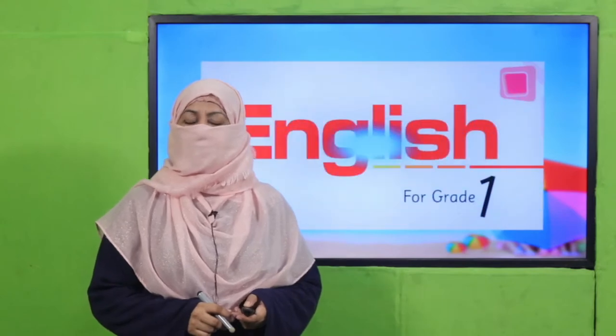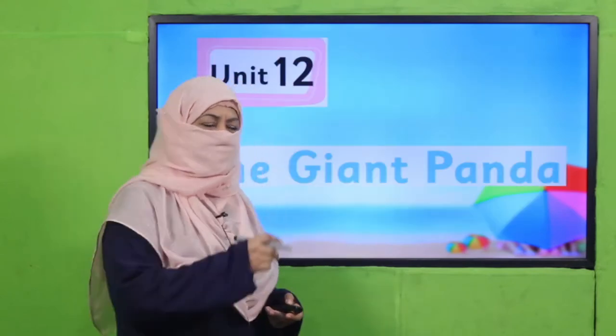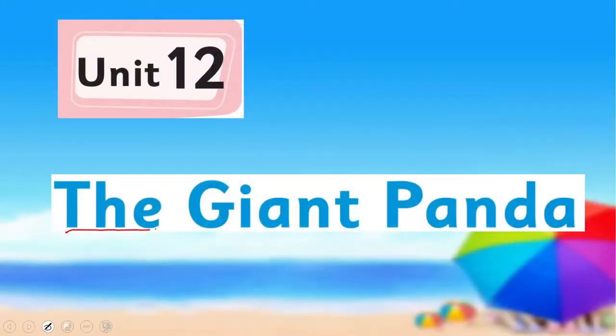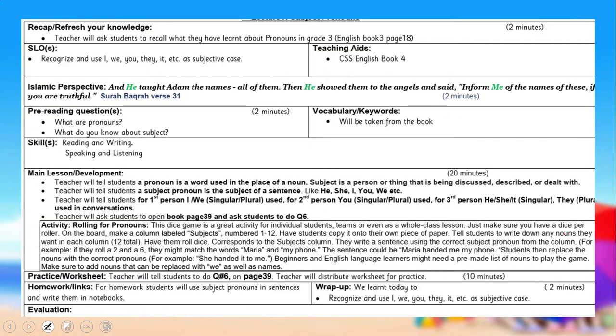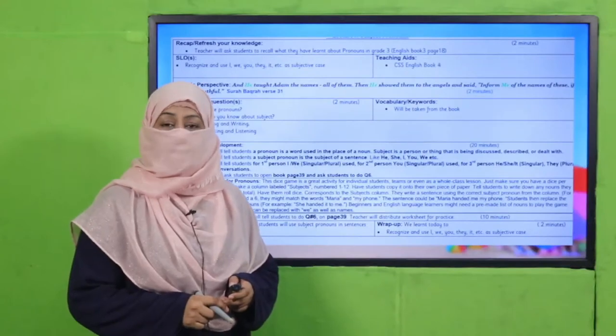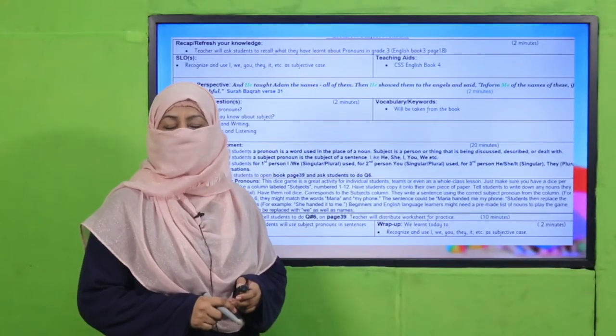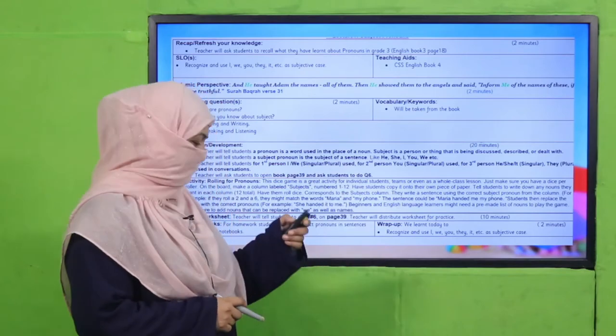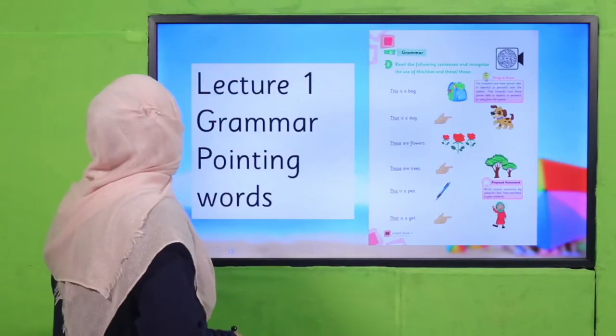Bismillahirrahmanirrahim. Assalamu alaikum, my dear students! I hope you are enjoying the best of health. I welcome you to my class — English for Grade One. We are learning Unit 12, whose title is 'The Giant Panda.' My dear fellow teachers, this lesson plan, PowerPoint presentation, and worksheet links are given; you may click, download, follow as is, or modify for your convenience.